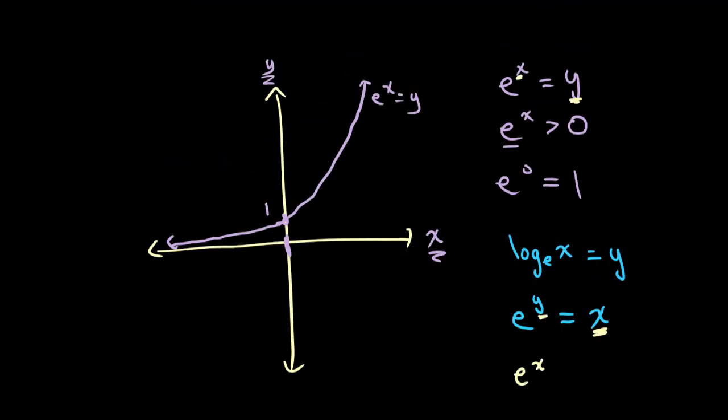Using what we know from functions, inverse function graphs are a reflection of the original graph in the line y equals x. To draw the graph of ln of x, we simply reflect this graph. We get something that looks like this, where this value is 1, the value of x never equals 0, and this goes on to infinity.